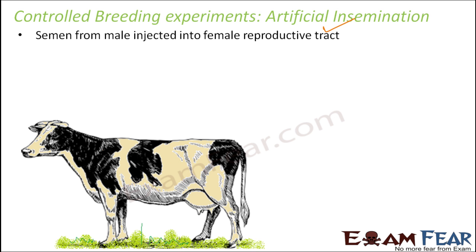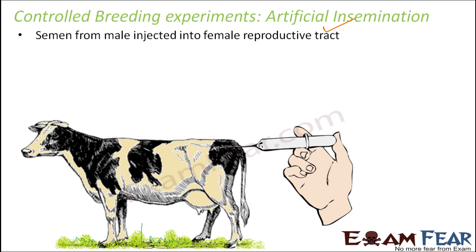Let us suppose this is the cow, that is the female. You have taken out the semen which contains the sperms from the bull — from a superior bull — and then you put it in an injection and directly inject it into the female reproductive tract. This is known as artificial insemination. Insemination means injecting the semen, and artificial means it is done artificially.